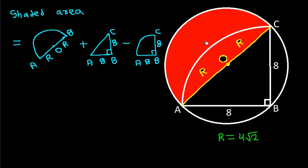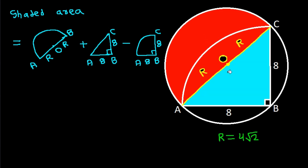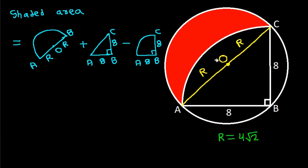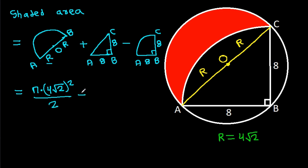Shaded area equals area of semicircle plus area of triangle minus area of quarter circle. Area of semicircle is pi times radius squared over 2, where radius is 4 root 2. Area of triangle is one-half times base 8 times height 8. Area of quarter circle is pi times radius 8 squared over 4.